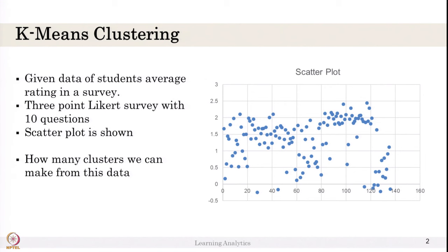Let us look at this data. It is a response of a 3-point Likert survey which has 10 questions. Ignore the x-axis numbers or y-axis. Consider this is a scatter plot plotting the average score or addition of score that students gave. We collected around 200 students' 3-point Likert survey responses plotted in a scatter plot. You want to see whether these students' survey responses have some clusters.